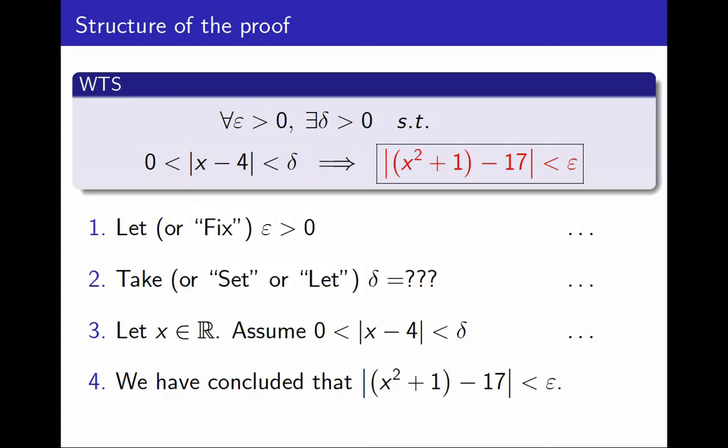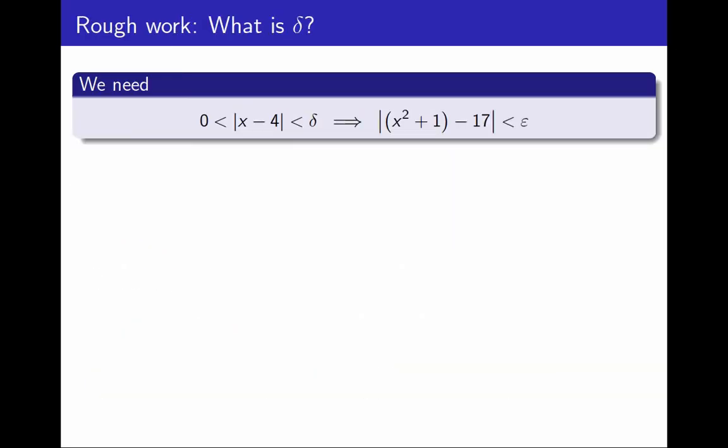Like before, the most difficult step is to decide what I take as δ. So before I start writing the proof, let's do some rough work to see if we can come up with a good expression for δ. I'll focus for now on the implication. I want to end up concluding that the distance between x² plus 1 and 17 is smaller than ε.